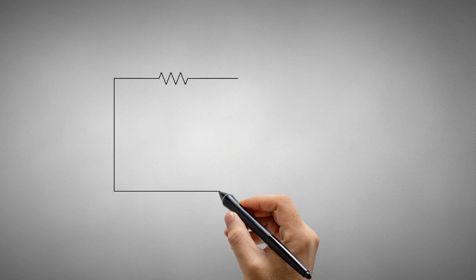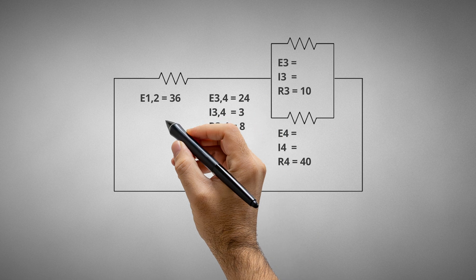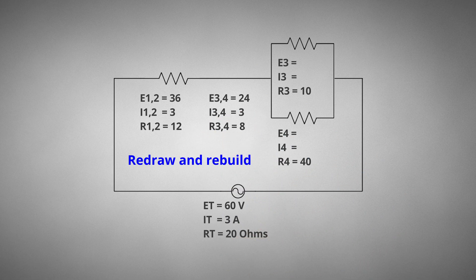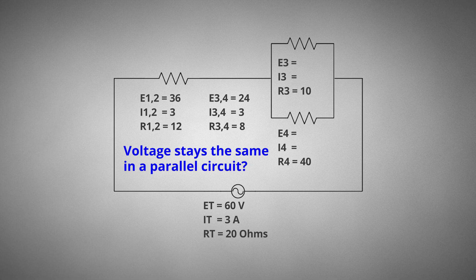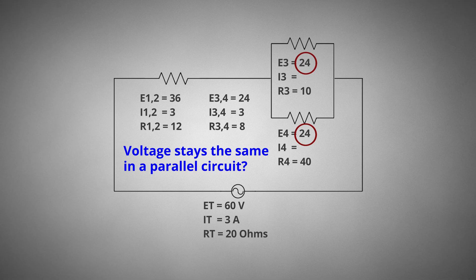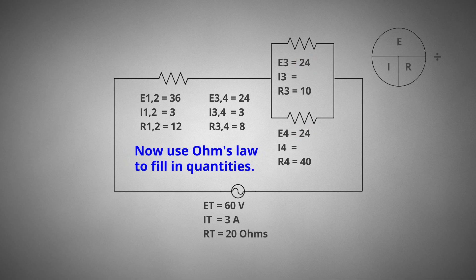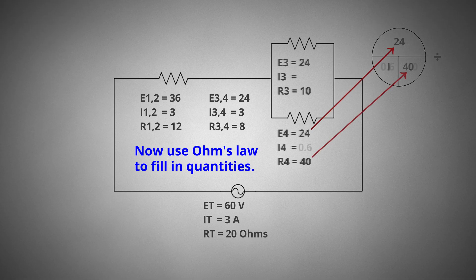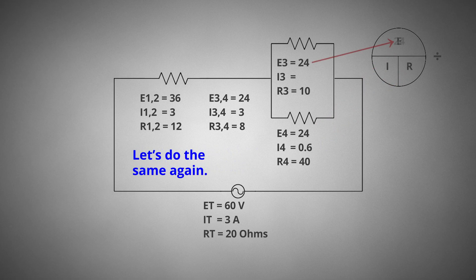Now redraw and rebuild. We are now back in a parallel circuit applying parallel circuit rules. Since R3 and R4 are in parallel, they both will have the same voltage as the combined voltage of R3 and R4, which is 24 volts. Since we know two quantities, we can use simple Ohm's Law. 24 divided by 40 ohms equals 0.6 amps. 24 volts divided by 10 ohms equals 2.4 amps.